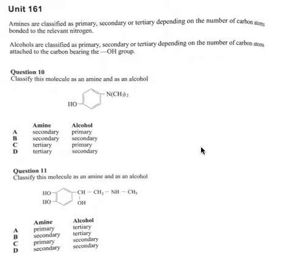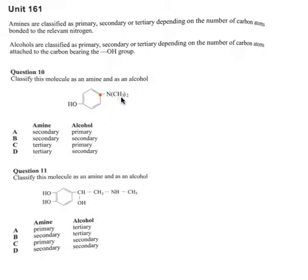Alright so for question 10, classify this molecule as an amine and as an alcohol. For an amine we look at the nitrogen here and you want to see how many carbons that nitrogen is connected to. It's connected to one carbon here in the benzene ring and it's connected to two carbons here which are part of the methyl groups. So this nitrogen is connected to three carbons which means it's a tertiary, so it's either C or D.